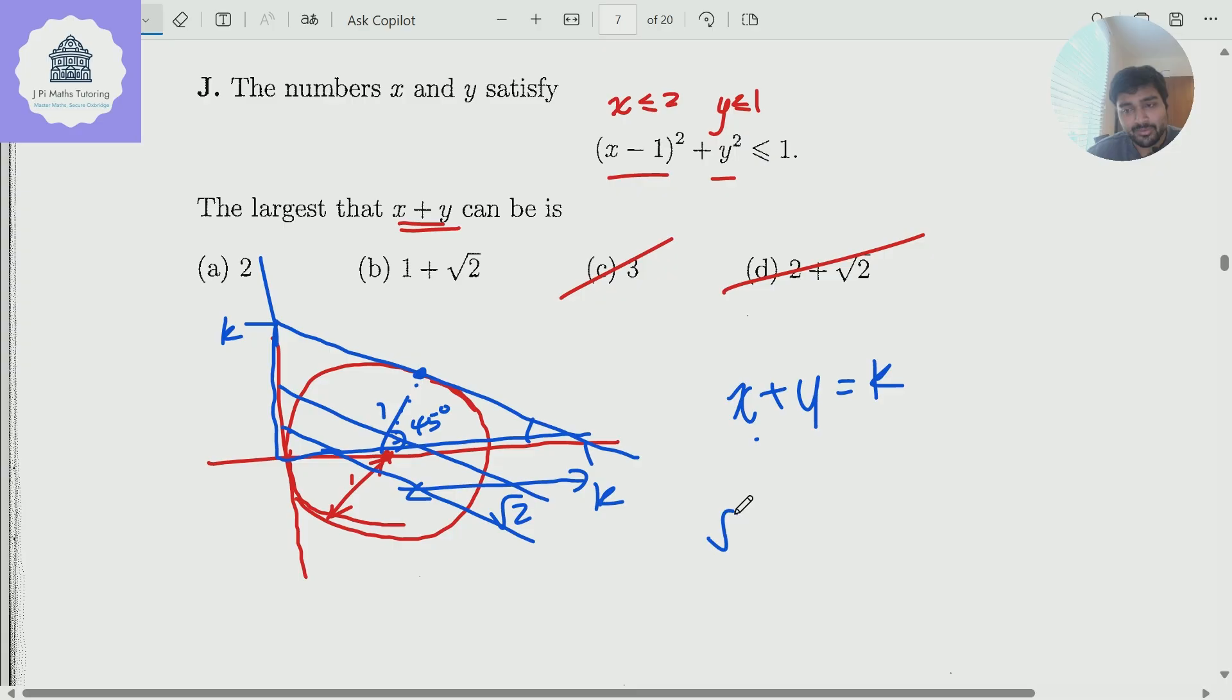And now we can clearly see that root 2 plus 1 equals k. Sorry, root 2, yeah, plus 1 equals k. And so the answer therefore is b. So I got this equation here by noticing that this distance here is k, which is just this root 2 that I've got here plus 1 radius of the circle. And so the answer here is 1 plus root 2, which notice is bigger than 2.